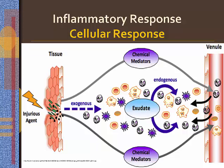Kinins, like bradykinin, are produced from precursor factor kininogen as a result of activation of the Hagemann factor 12 of the clotting system, and cause contraction of smooth muscle and vasodilation. This results in the stimulation of pain.